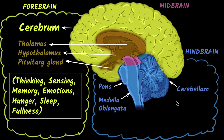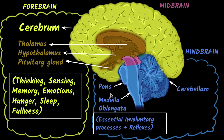What are the functions of the hindbrain? The medulla oblongata's main function — the brain stem — is controlling essential involuntary processes, like your heart beating and your breathing. All the important involuntary processes necessary to sustain life are controlled by the medulla oblongata. Along with that, some of your reflexes are also controlled by the medulla.